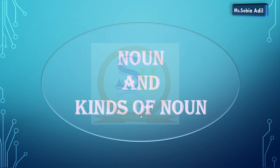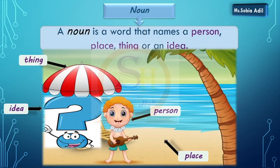What is a noun and what are the kinds of nouns? A noun is a word that names a person, place, thing or an idea. Noun kya hai? It's a naming word. Koi bhi naam joh hum kisi specific person, place, shaks, chiz, jaga, ya kisi idea ko dete hain — that is called a noun.